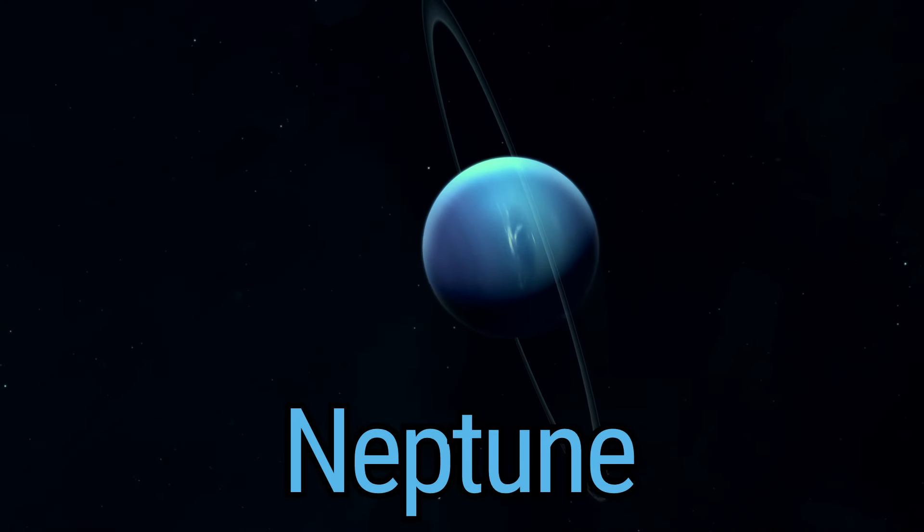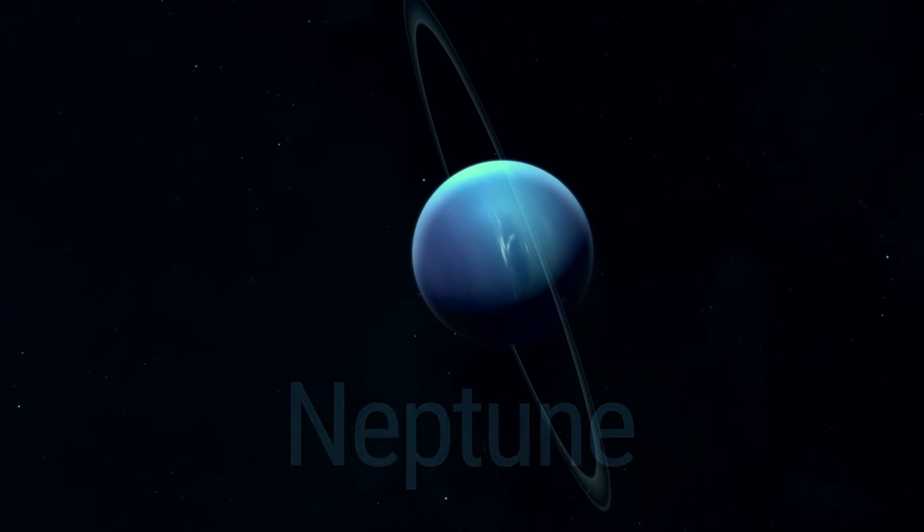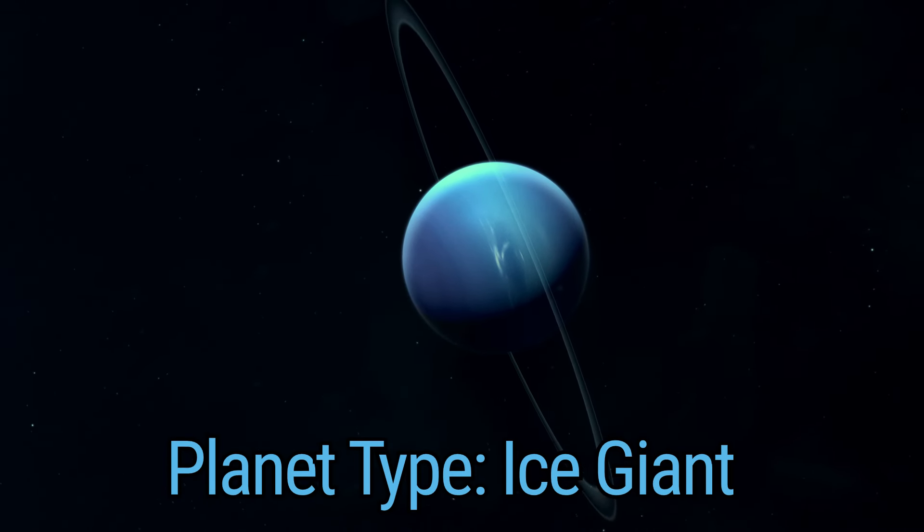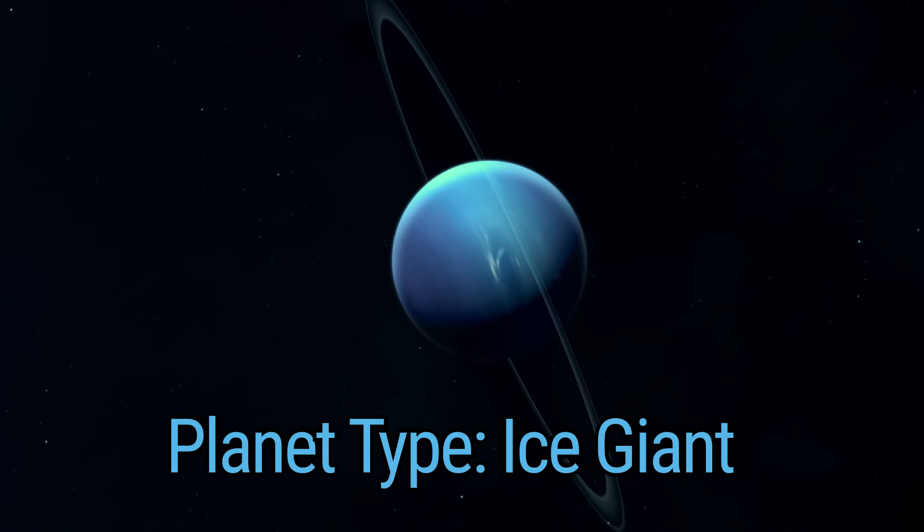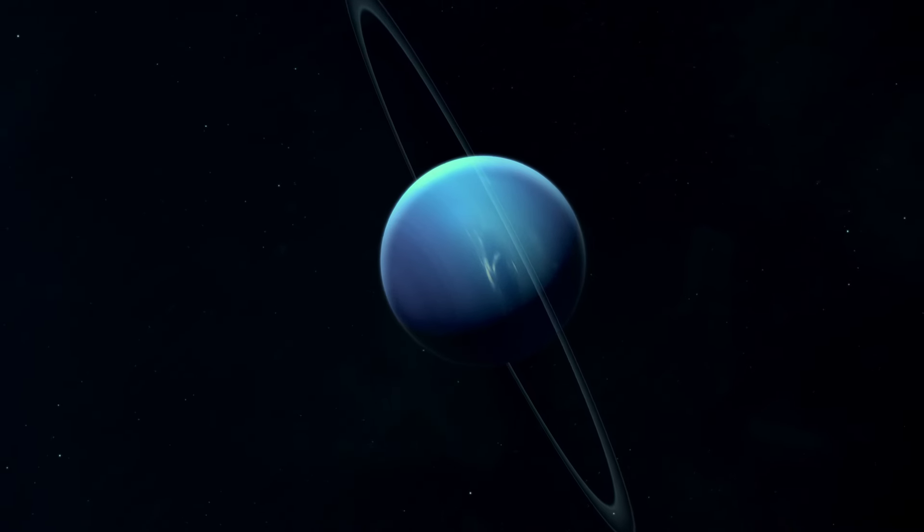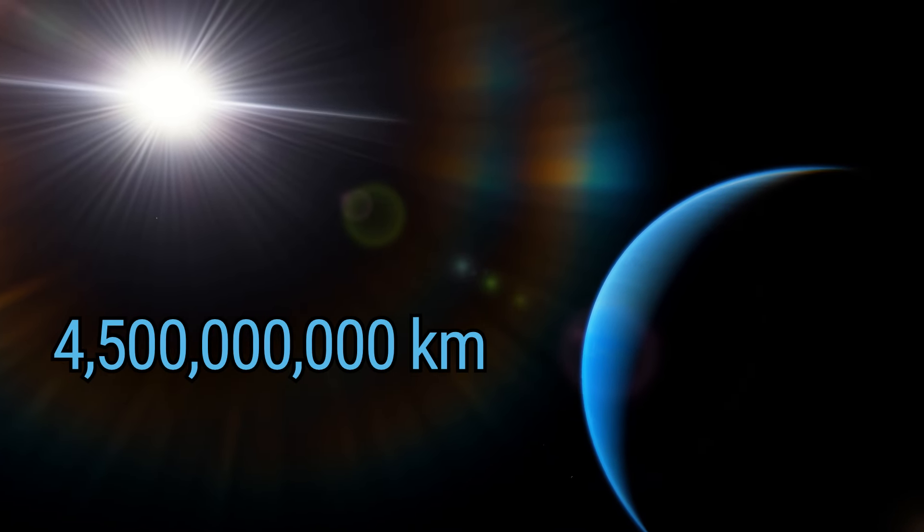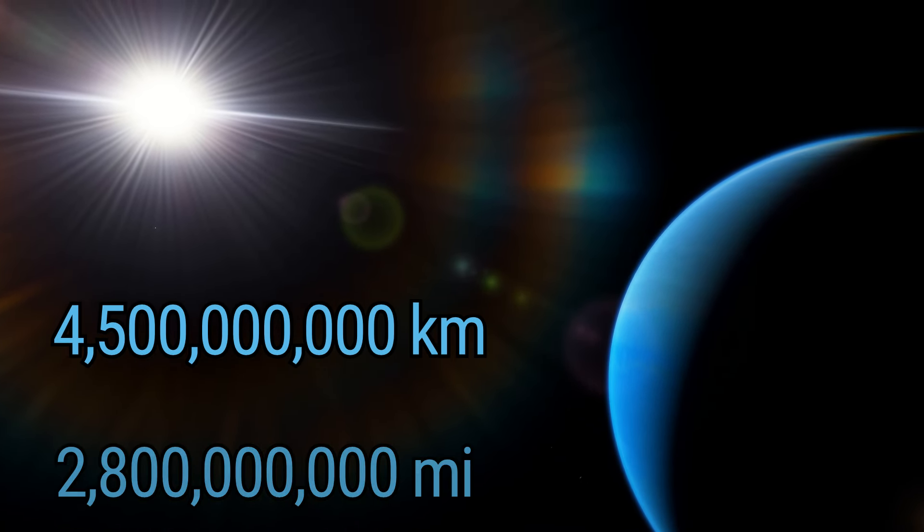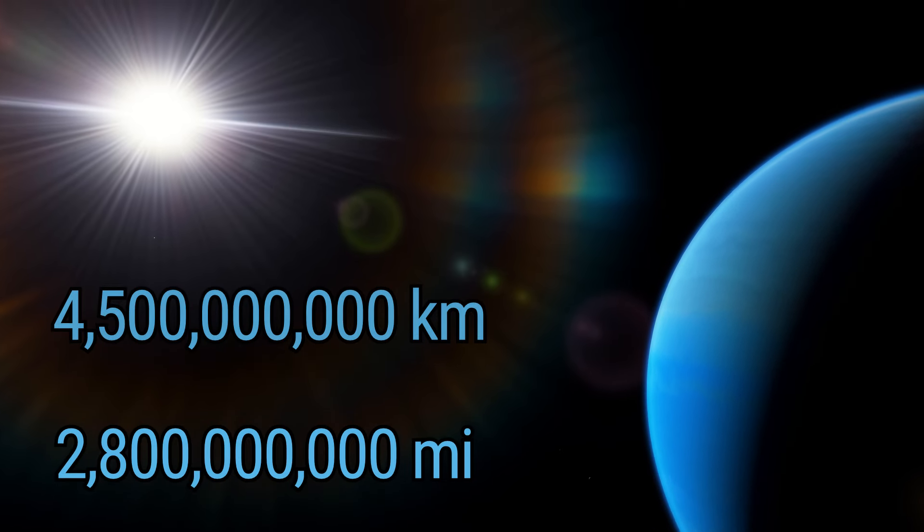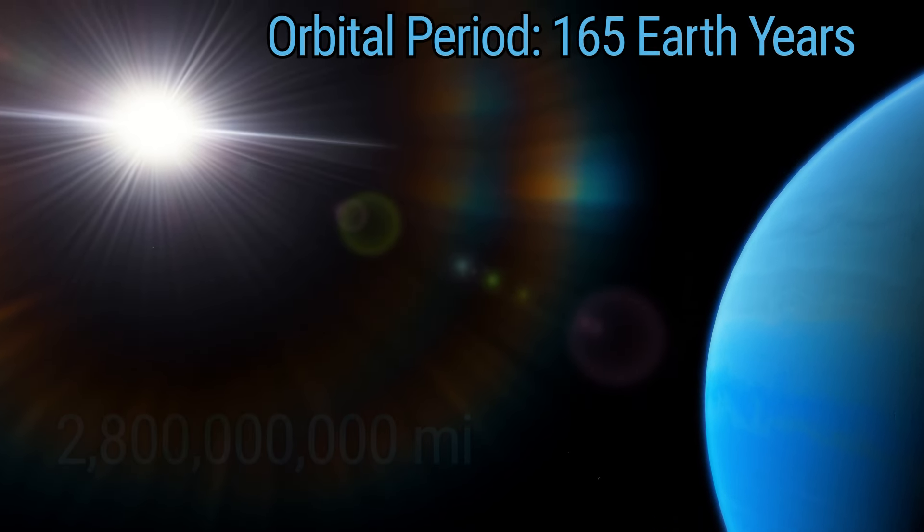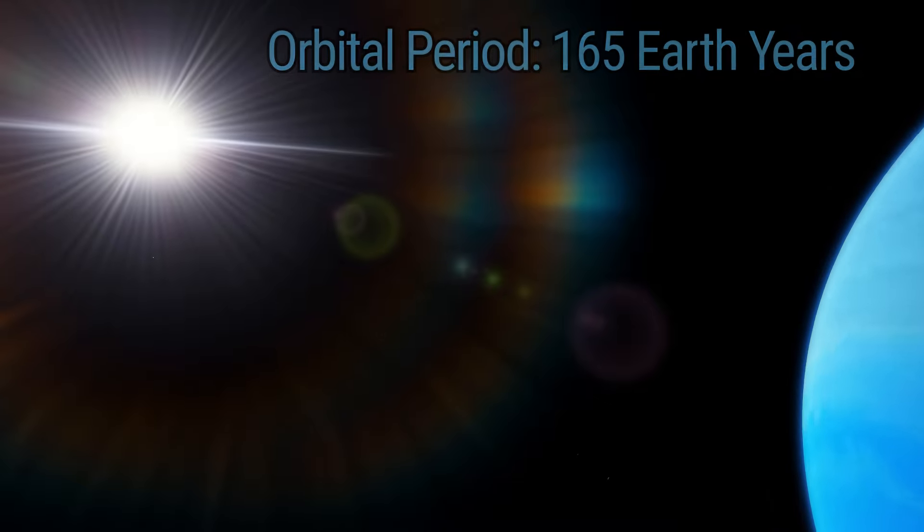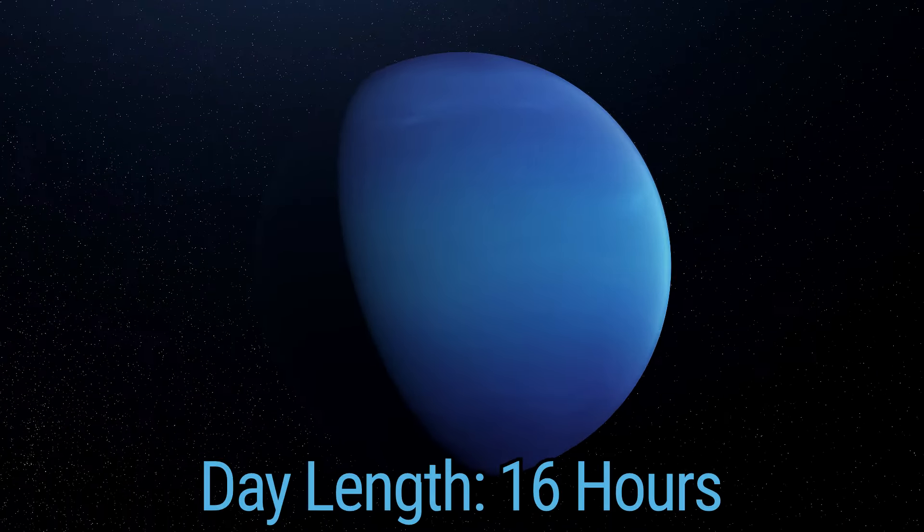Finally, we reach Neptune, the distant wanderer, an ice-giant type planet that possesses the most ferocious winds in the solar system. Neptune orbits the Sun at an average distance of about 4.5 billion kilometers, or 2.8 billion miles, taking 165 Earth years to complete one Neptunian year, with a day lasting 16 hours.